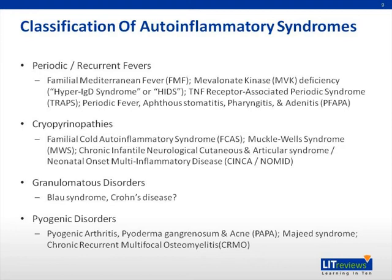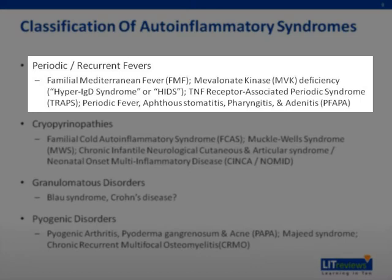The next slide summarizes the current classification of auto-inflammatory syndromes. These are rather unusual syndromes with prevalence ranging from isolated case reports for things like SYNCA and NOMID to approximately 200 out of 100,000 for Crohn's disease in adults. The first group includes disorders known as periodic or recurrent fevers: FMF or Familial Mediterranean Fever; MVK or Mevalonate Kinase Deficiency, also known as Hyper-IgD Syndrome or HIDS; TRAPS or TNF Receptor-Associated Periodic Syndrome; and PFAPA, standing for periodic fever, aphthous stomatitis, pharyngitis, and adenitis.